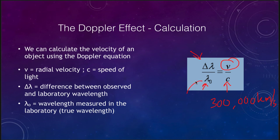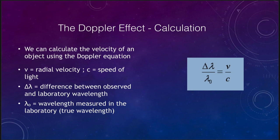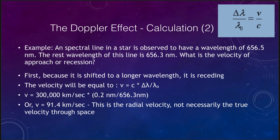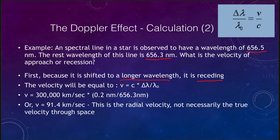The speed of light is a constant, and we can use these values to calculate the velocity of the object. For example, let's say we observe a wavelength of 656.5 nanometers for a line that should be in the laboratory at 656.3 nanometers — so it's only been shifted by two-tenths of a nanometer. It is shifted towards a longer wavelength, which means it's receding or moving away from you. If the observed wavelength is shorter than the rest wavelength, then it is moving towards you.